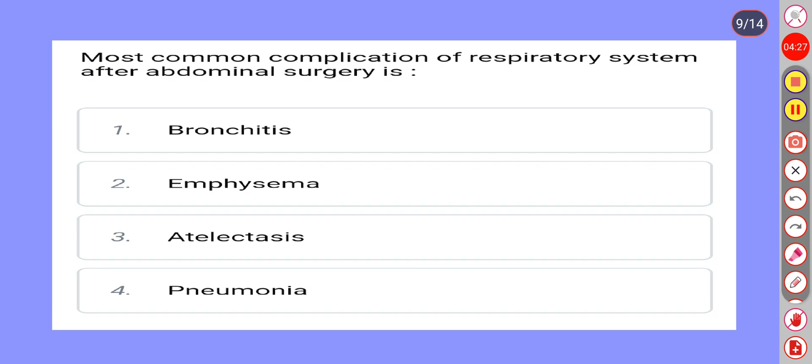Next question. Most common complication of the respiratory system after abdominal surgery is: Option 1: Bronchitis. Option 2: Emphysema. Option 3: Atelectasis. Option 4: Pneumonia. Correct answer is Option 3: Atelectasis.